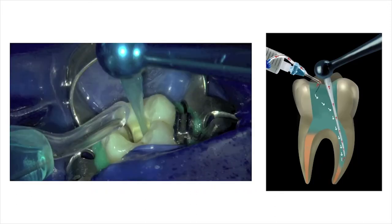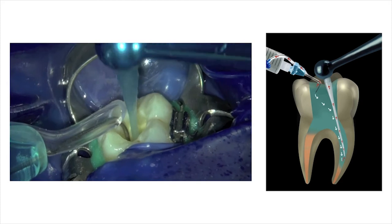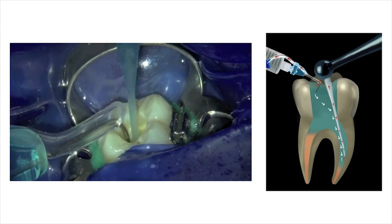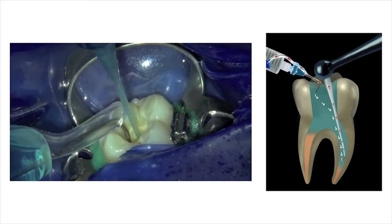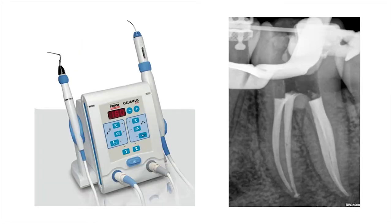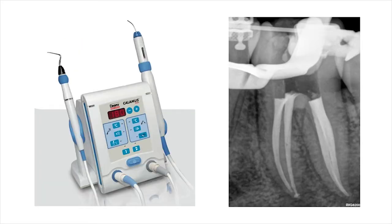This was followed by a final irrigation step using heated 3.5% sodium hypochlorite in the EndoVac system. After irrigation, the canals were obturated with the gutta-percha points and pulp canal sealer using the Calamus dual obturation unit in a continuous wave of condensation mode. This periapical radiograph illustrates the immediate post-operative result of the obturation of the root canals.